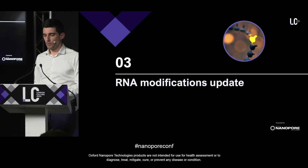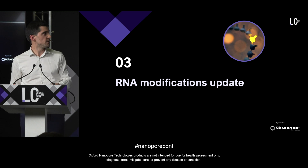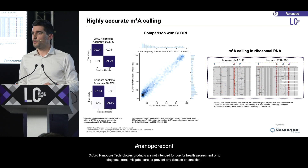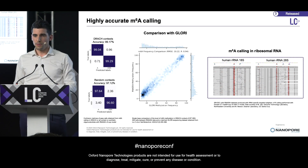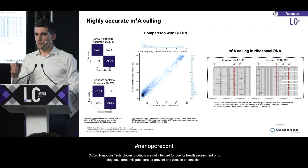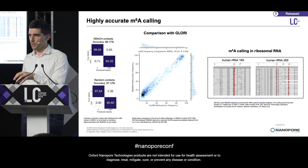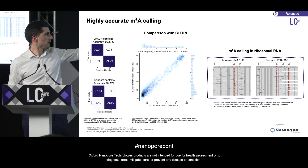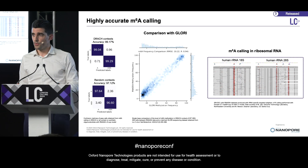On to RNA modifications now. We've spent a considerable amount of time updating our RNA models. As you've heard, we've actually updated our m6A model from DRACH-only to all contexts. In the process, we've also managed to improve the DRACH accuracy, which is now at 99% in this specific model — so that's great. The all-context validation accuracy is actually not far behind. We're really pleased to release this model to the community.